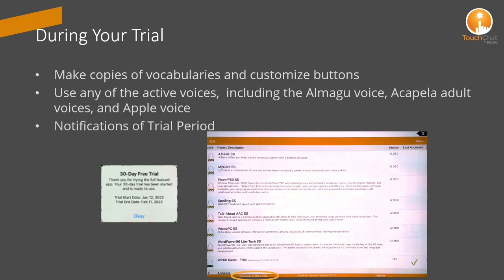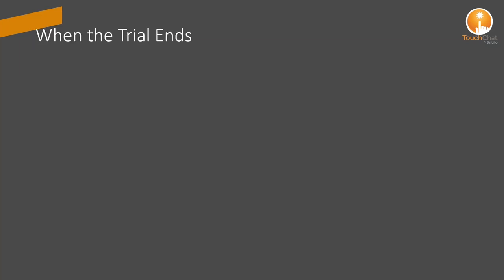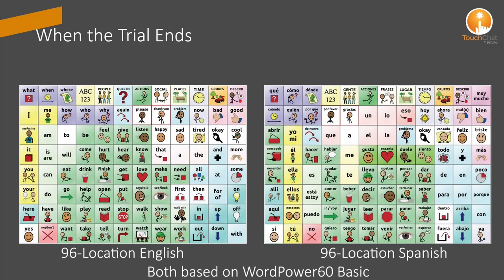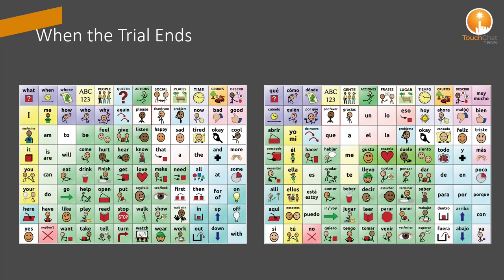At the end of your free 30-day trial, you will have the option to purchase access to Touch Chat Light, Touch Chat HD, or Touch Chat HD with Word Power, and continue your journey with Touch Chat. If you decide not to purchase, you will still have access to two 96-location communication boards for modeling language, but there will be no voice output. You can still export any customized vocabulary files created during the trial, but they will not open in the free Touch Chat Discover app.